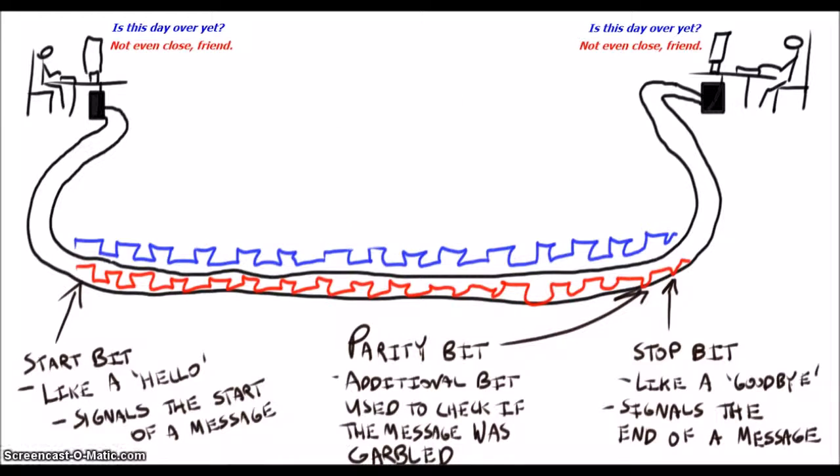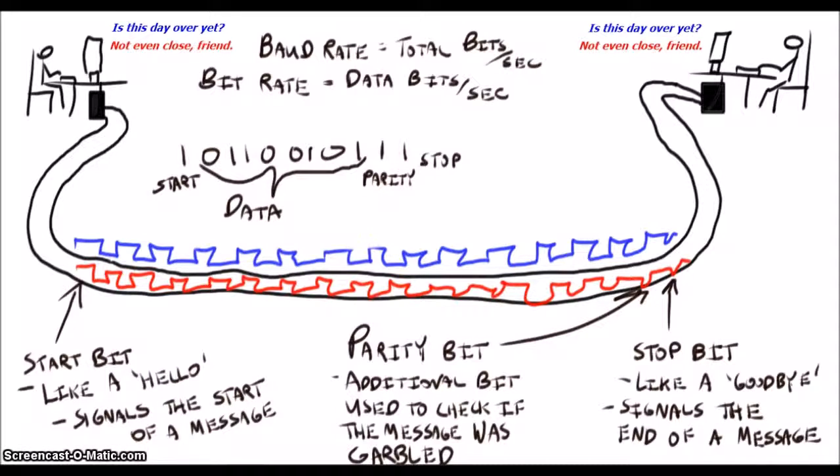Which brings us to baud rate and bit rate. Baud rate is defined as the number of total bits you are sending across the line in bits per second. Bit rate is defined as the number of data bits you are sending in bits per second. So for our example, if we send eight bits of information every second, we would have a baud rate of 11 bits per second or BPS and a bit rate of eight bits per second. Kind of confusing? Well, let's just keep the idea of baud rate in your head for the next few moments.